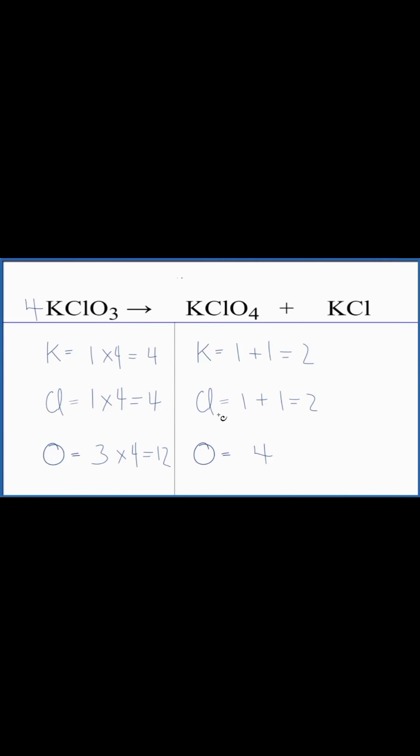On this side over here, now I could put a three in front of the KClO4. Let's update these numbers. So now I have one times three plus the one here. That gives me four. The potassiums are balanced.